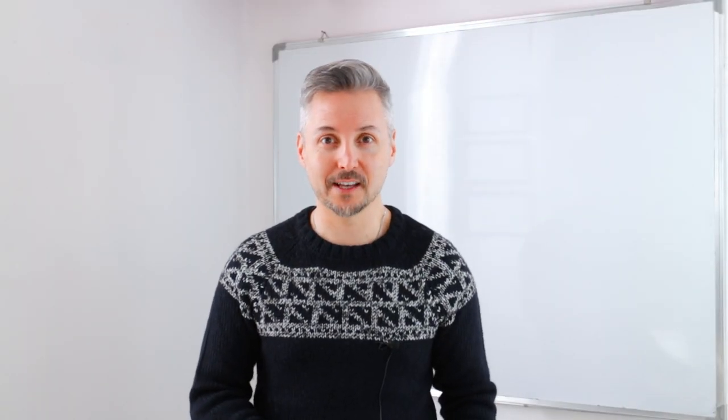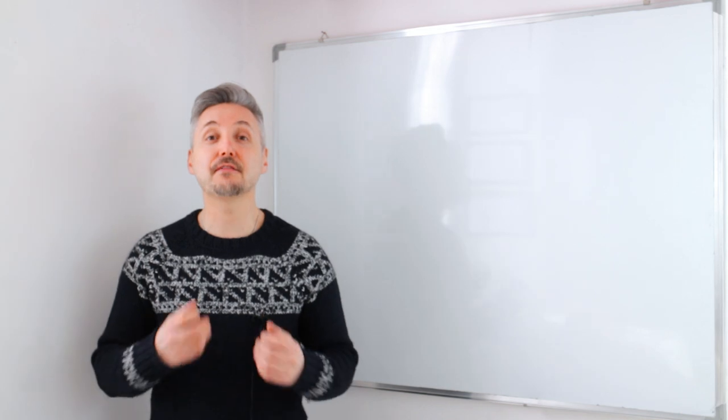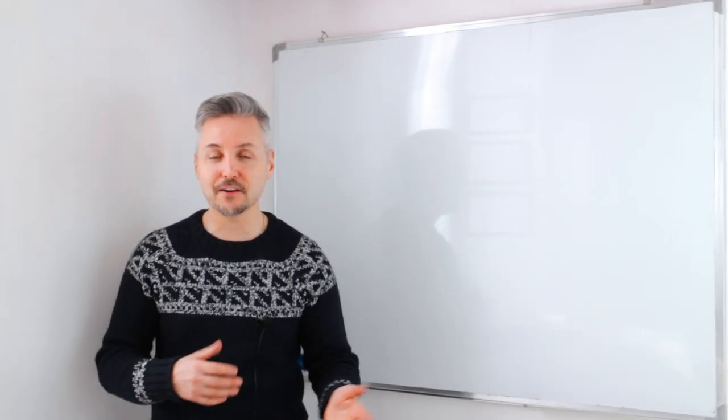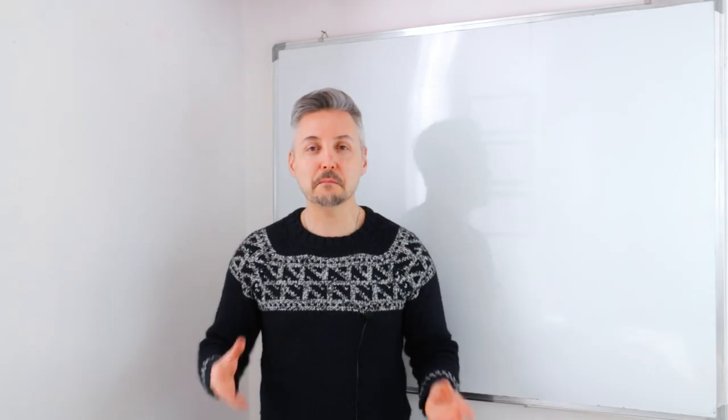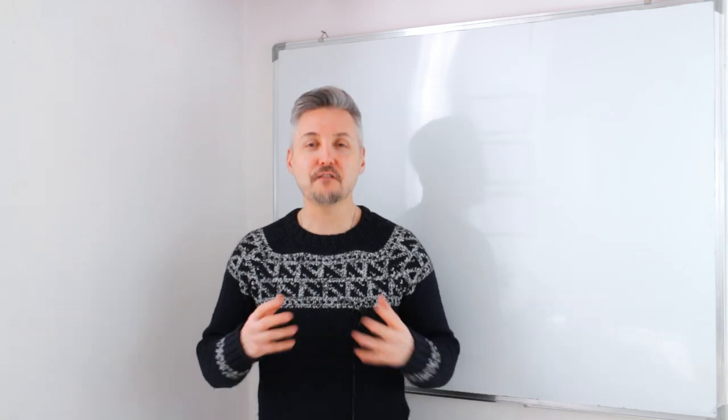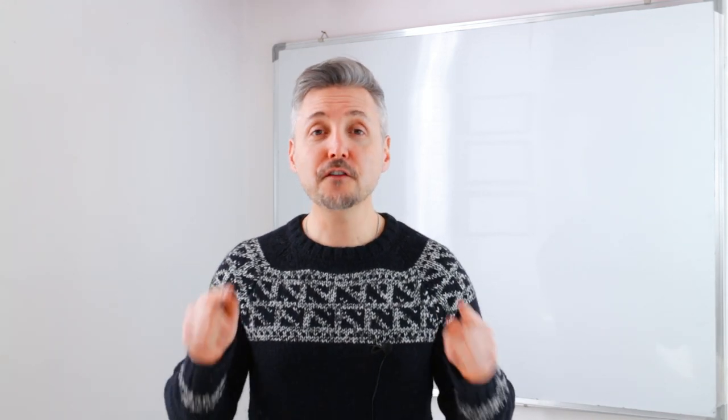Now let's recap. In this lesson we took a look at adverbs of frequency, such as always, often, usually, never, ever, etc. They're usually placed before the main verb, but after the verb to be. They can be placed at the beginning of a sentence to make the meaning stronger — these are used in formal contexts. I hope you enjoyed the lesson. If you have any requests, comments, or want to type your own example, you may do so under this video. Enjoy your day, don't forget to subscribe to my channel, and see you next week. Take care. Bye-bye.